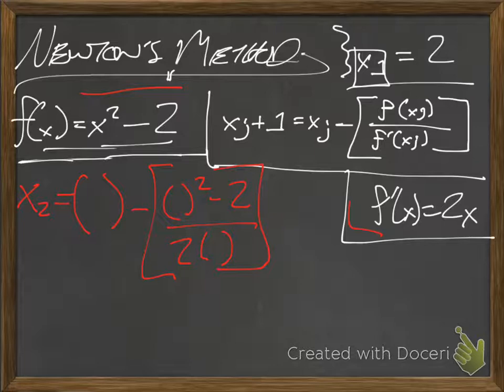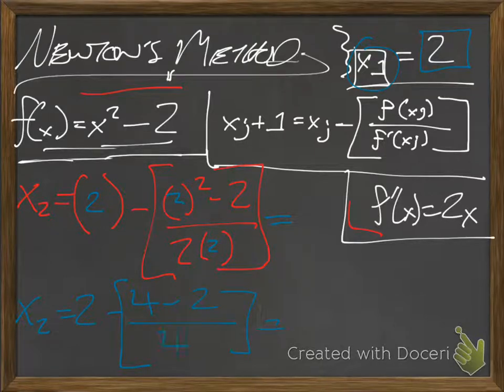So what are we going to plug in here for our x_i? Well, this is x₂, so we're going to be plugging in the value from x₁, which is just 2, so we're going to put 2 in all of these little parentheses here. And now we're just doing simple arithmetic, so x₂ equals 2 minus, well, 2² is just 4, minus 4, minus 2, over 2 times 2, which is 4.